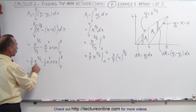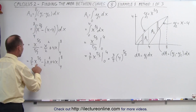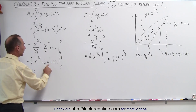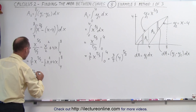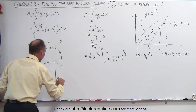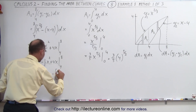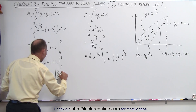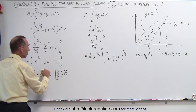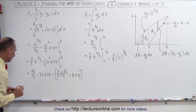Plugging in the upper limit of 8: the cube root of 8 is 2, so 2 to the fifth power is 32, giving 3 times 32 over 5 which is 96 over 5. Then 8 squared over 2 is 64 over 2, which is minus 32. And plus 4 times 8 is plus 32 — those cancel. Now subtracting the lower limit: plugging in 4 gives three-fifths times 4 to the five-thirds, minus 16 over 2 which is minus 8, and then plus 4 times 4 which is plus 16.